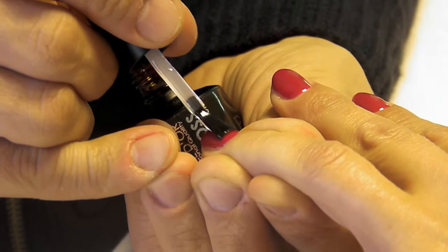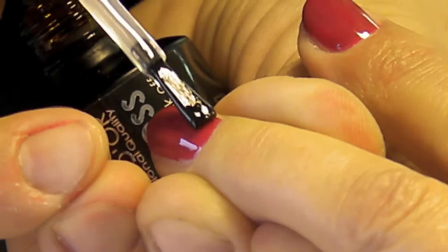We apply the top gloss. With this top gloss, you guarantee shining and brilliant nails for 20 days. Cure in LED light for 30 seconds or 2 minutes in UV lamp.